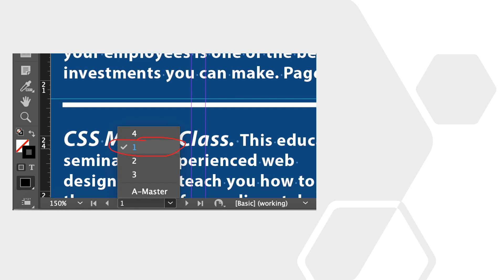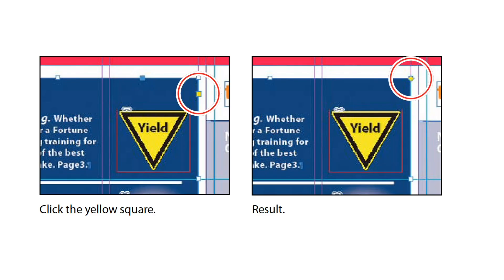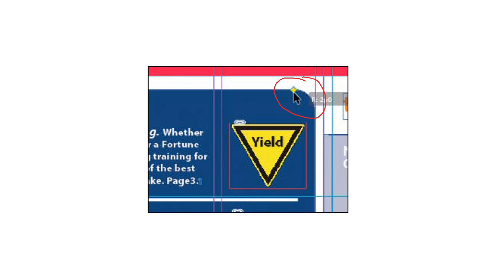Next we'll modify a text frame by adding rounded corners. We'll choose one from the page box at the bottom of the document window. Using the selection tool, select the dark blue text frame, then click the small yellow square that's slightly below the resizing handle at the upper right corner of the frame. Four small yellow diamonds replace the four sizing handles at the corners. Drag the diamond at the upper right corner to the left and release when the live radius value is 2p0. As you drag, the other three corners change too.